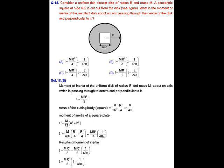The mass of the cutting body — the square plate — equals mass per unit area times the area of the cutting body. That is (M / πR²) × (R²/4), which gives the mass of the cutting body as M/(4π).